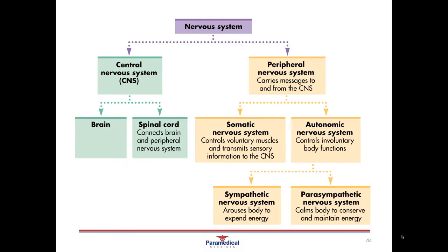The peripheral nervous system has further subdivisions. One is the somatic, which is all the voluntary aspects of our nervous system. So any voluntary movements or actions that take place are all part of the somatic nervous system.